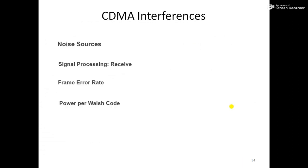CDMA signals experience high interference from sources other than CDMA users. This takes two forms: interference from other users in the same mini-cell, and interference from adjacent cells. The total interference also includes background noise and other spurious signals. In spread spectrum technology, radio signals are distributed on a single 1.23 MHz wide frequency band. Each subscriber has an assigned PN code; signals matching the PN code are decoded, while those that do not match are treated as noise and ignored.